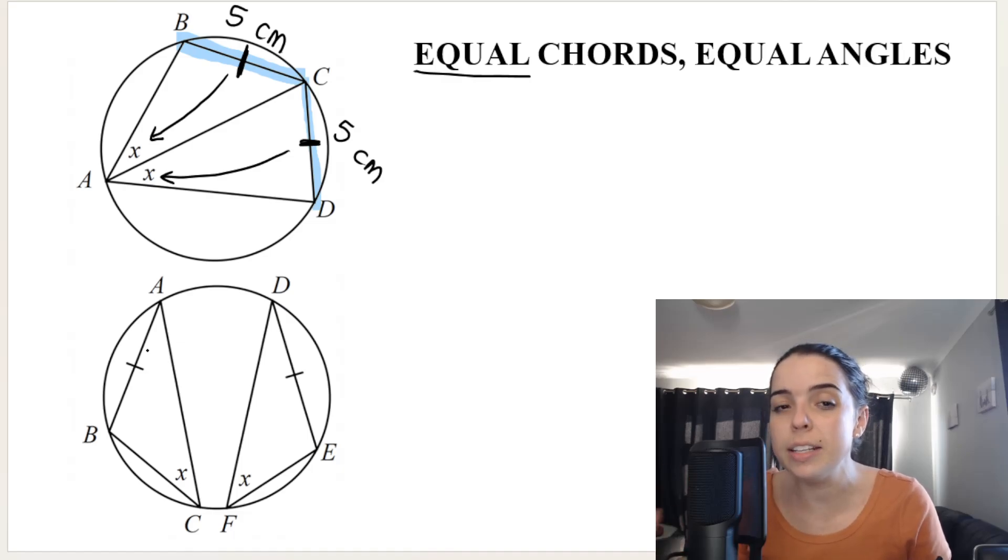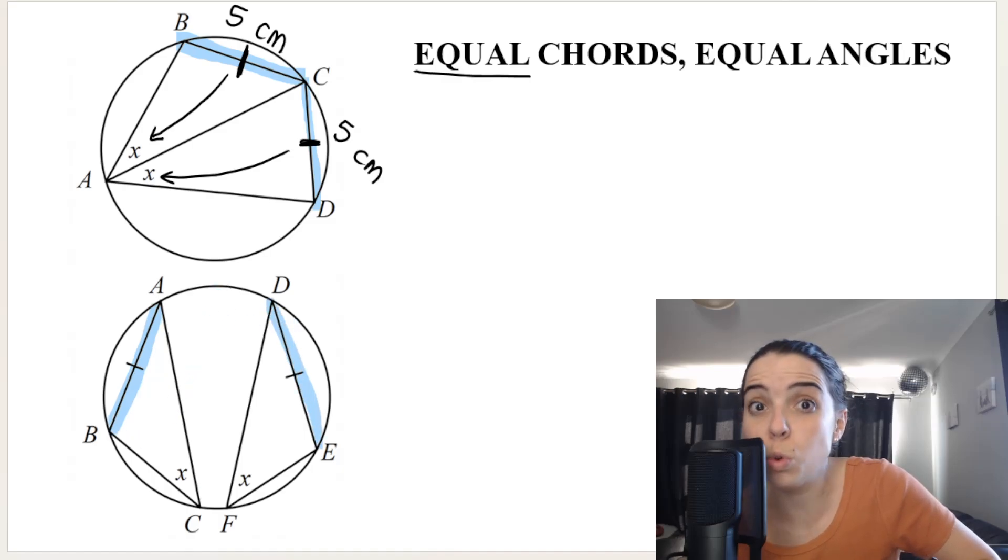Those angles are also equal in size because they're opposite equal chords. Same thing over here at the bottom image. You can see that AB is a chord and it's equal in length to DE. That is also a chord.